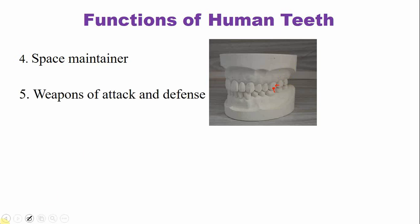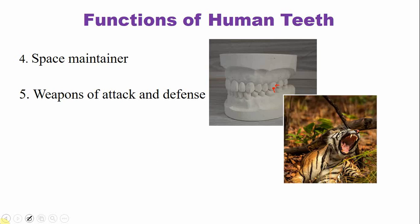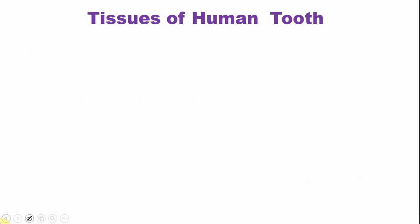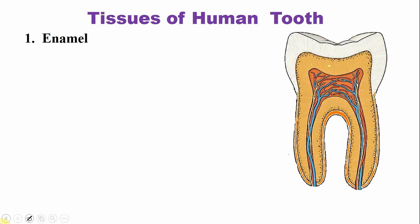Teeth are also a weapon of attack and defense, needed by animals. Humans rarely use their teeth as a weapon of attack and defense. Human teeth basically comprise of four tissues: enamel, dentine, pulp, and cementum.